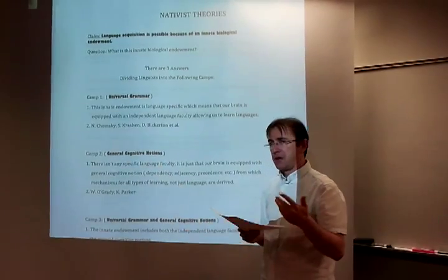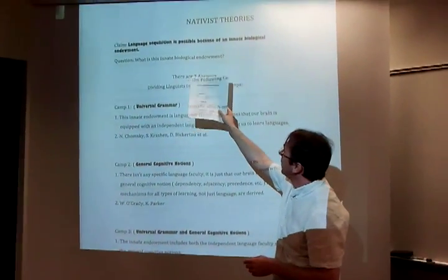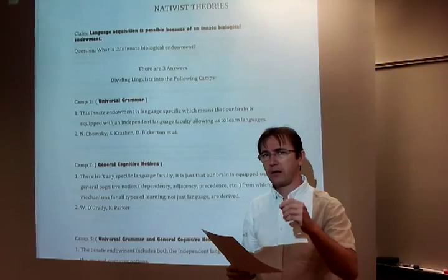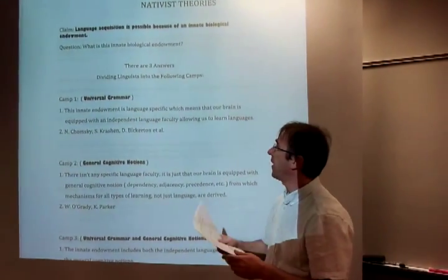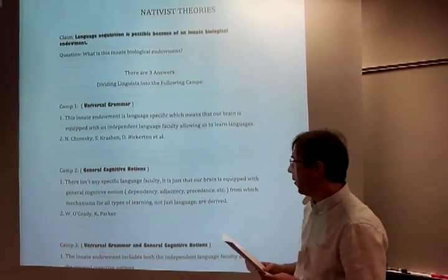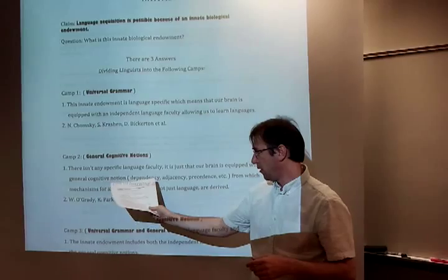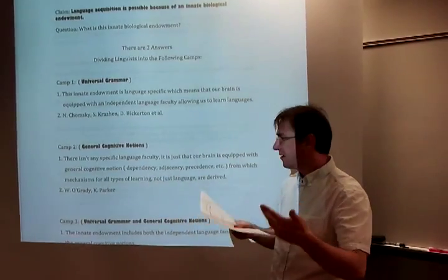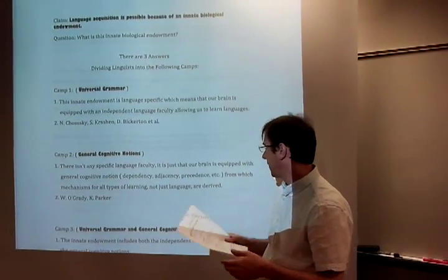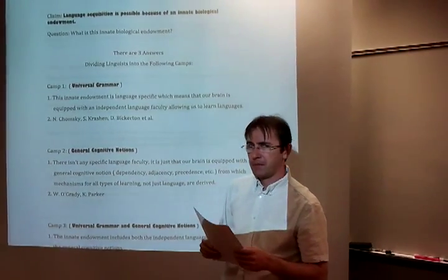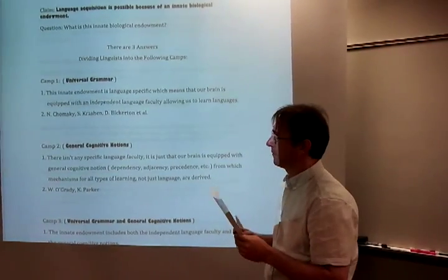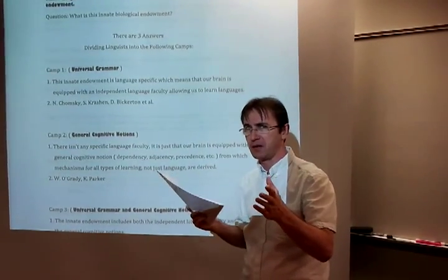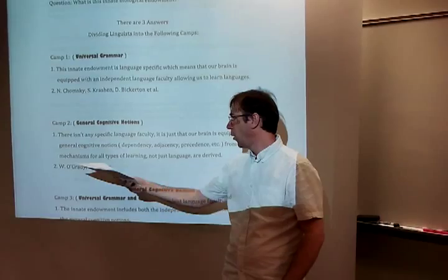Camp 2 also tries to answer the question of what this innate biological endowment is. They say our brain is not really equipped with any language acquisition device per se, but we learn languages through general cognitive notions, such as dependency, adjacency, precedence, and so forth — not through a specific language acquisition device, but through general cognitive mechanisms. The names in this camp are O'Grady and Parker.